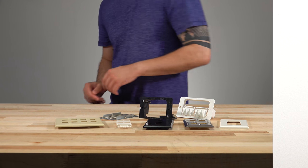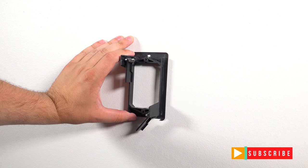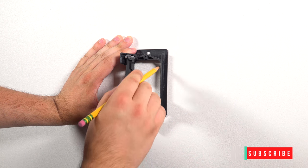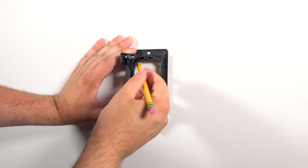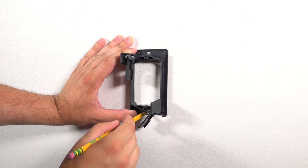Well let's go cut some drywall. I'll be using the Datacom wall frame caddy for this example. Line up the caddy and make sure it's level and then trace the inside of the caddy with a pencil. And then draw two lines in the top and bottom holes.